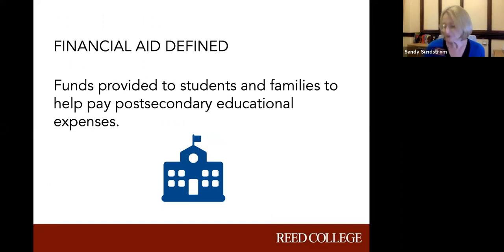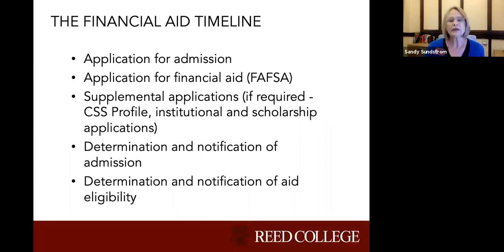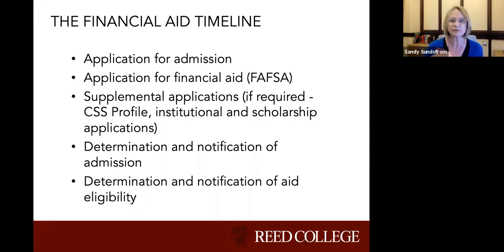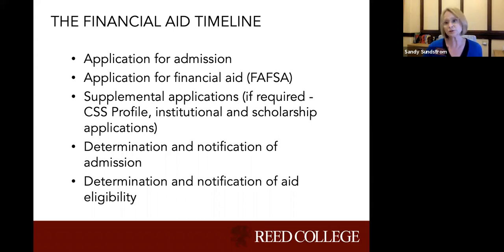Financial aid is funds provided to students and families to help pay for post-secondary educational expenses. The timeline typically works like this: you figure out all the schools you want to apply to, apply for admission, and around that same time apply for financial aid. You may have heard of the FAFSA — the Free Application for Federal Student Aid — which is for domestic students. International students wouldn't complete a FAFSA but might need other applications. The school will determine if you're admitted, and then the financial aid office will determine your eligibility for aid and notify you.